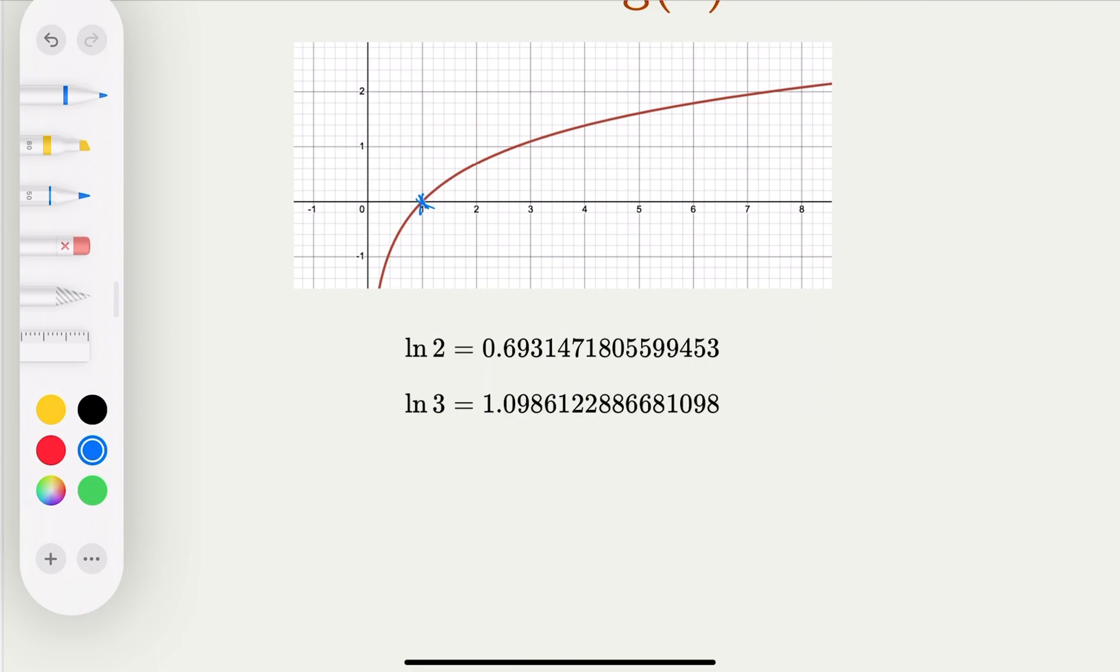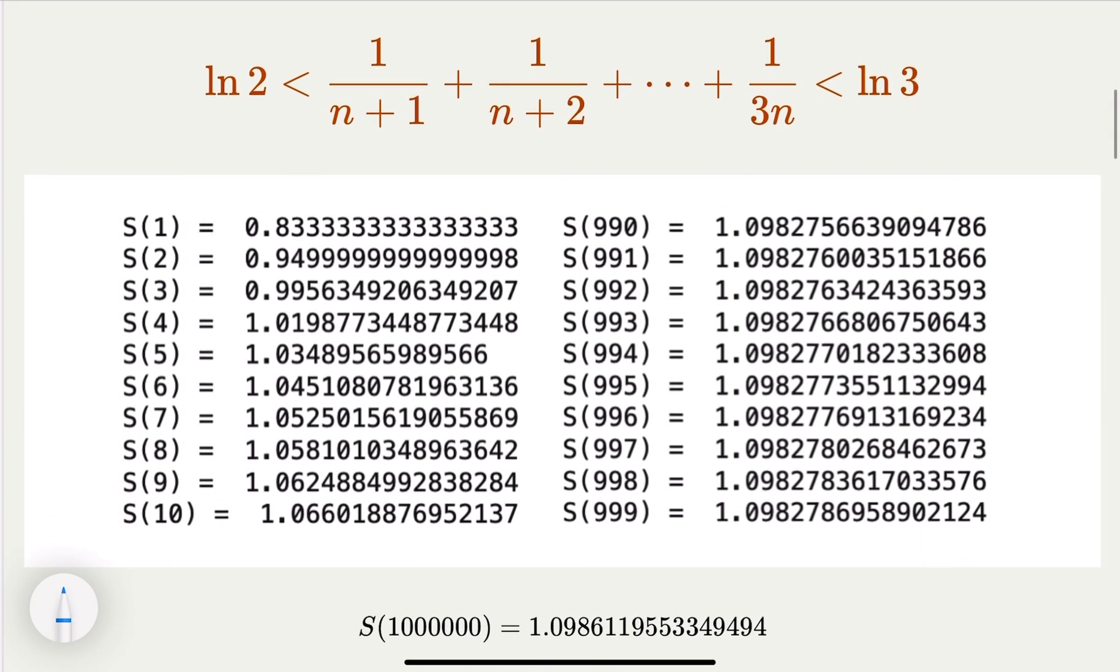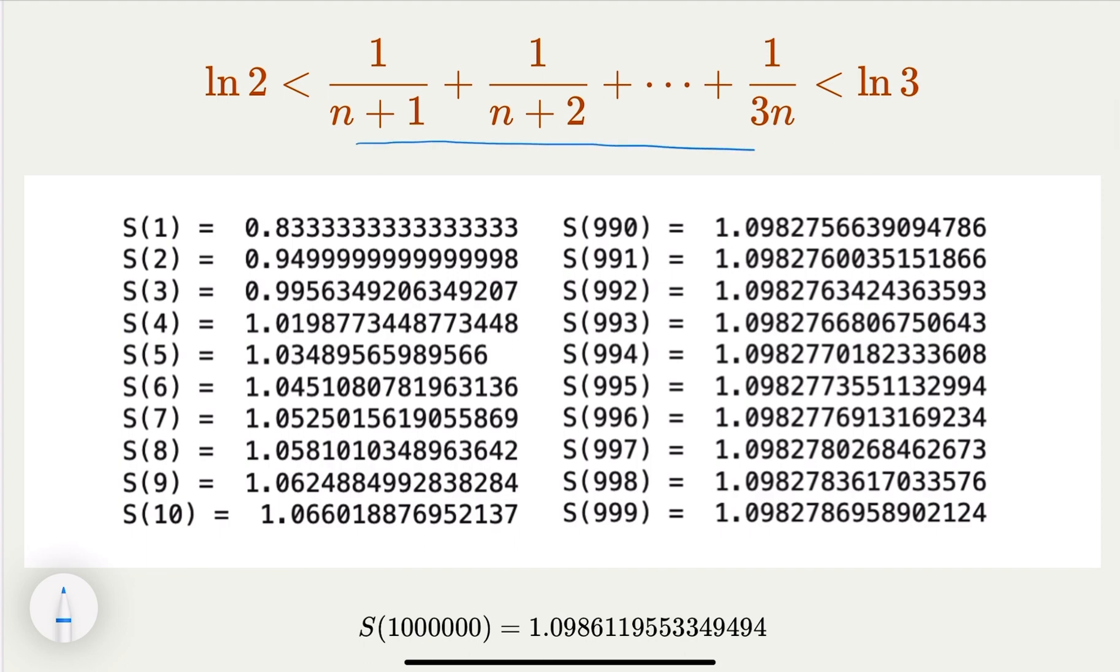And log 2 is about here, 0.69. Log 3 is about 1.098. So as a matter of fact, it's good to memorize these commonly used math constants, like log e, log 2, log 3.